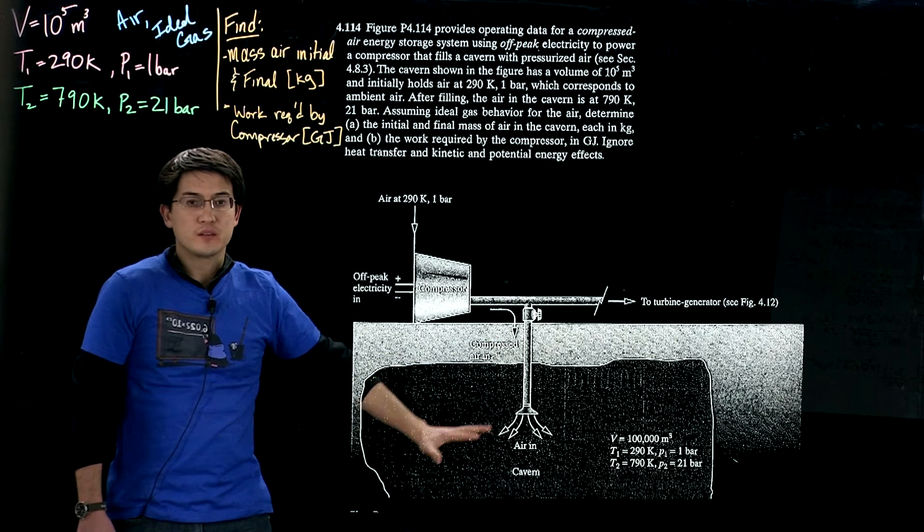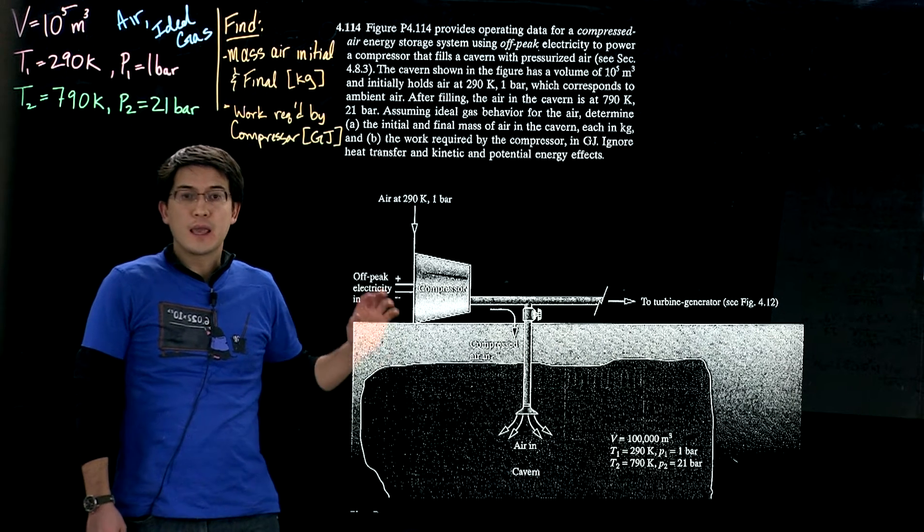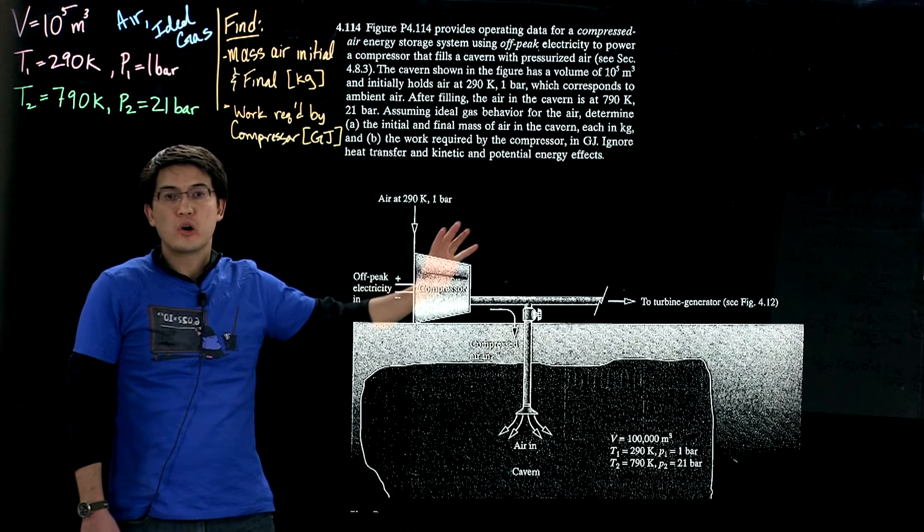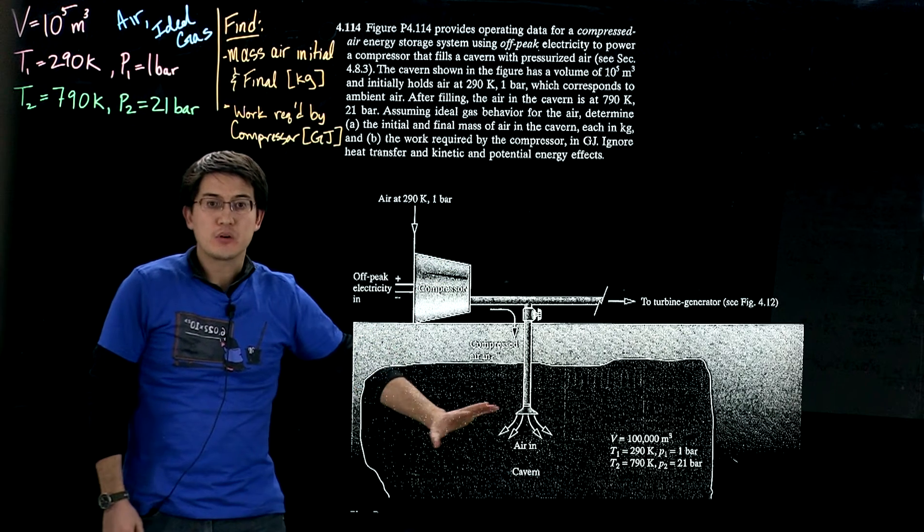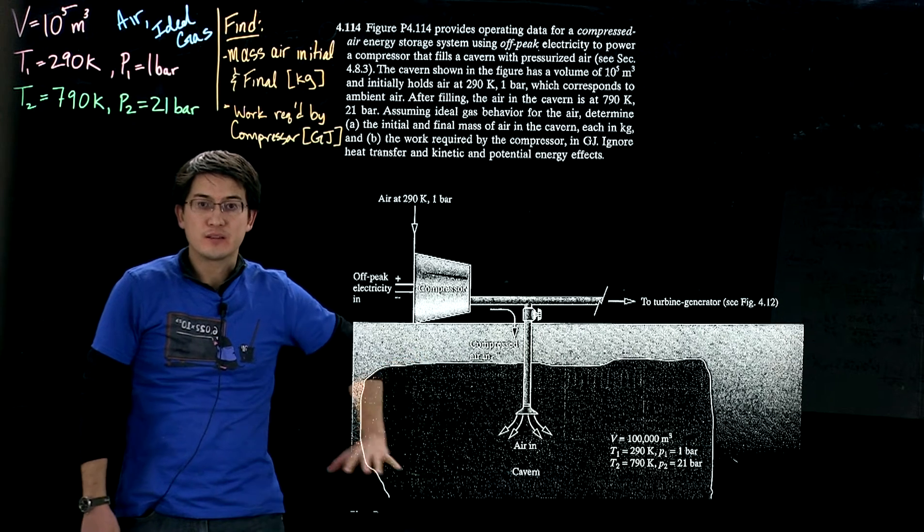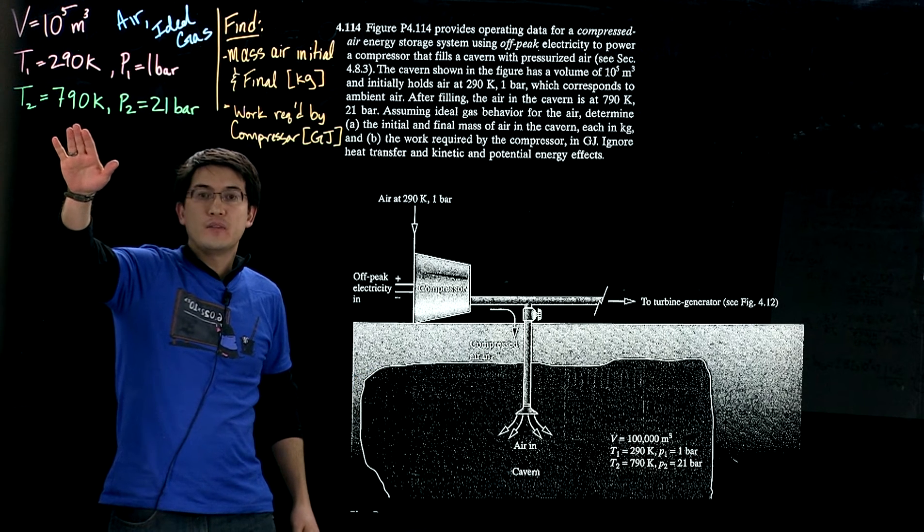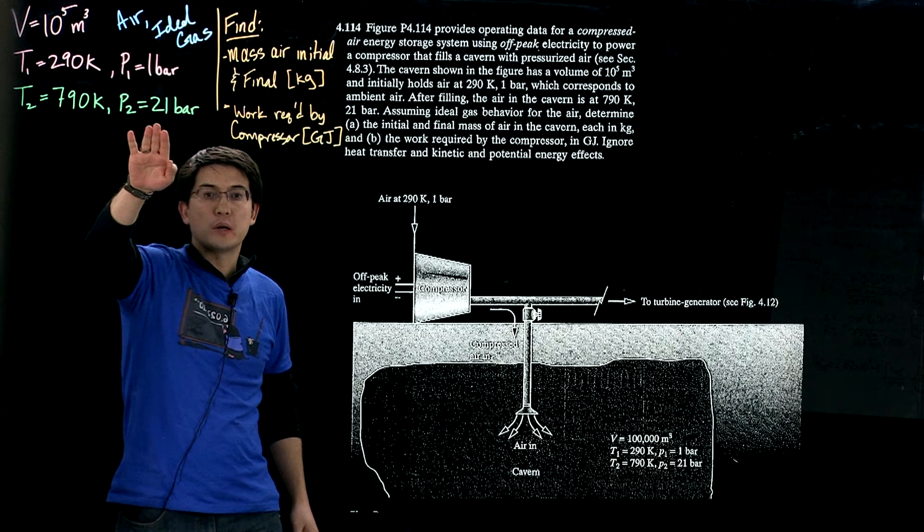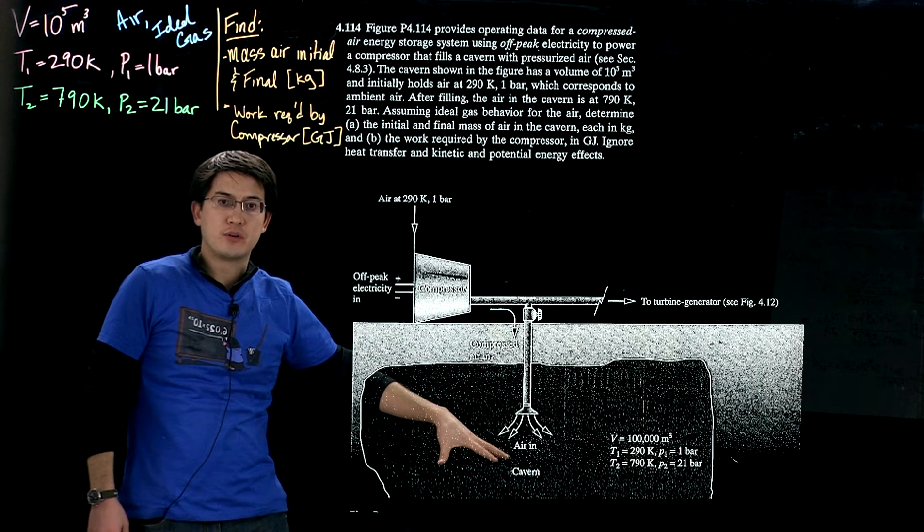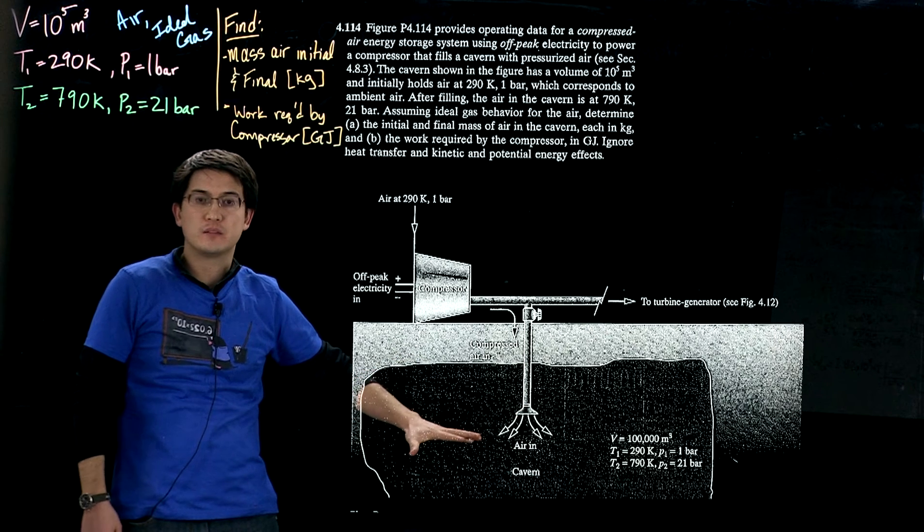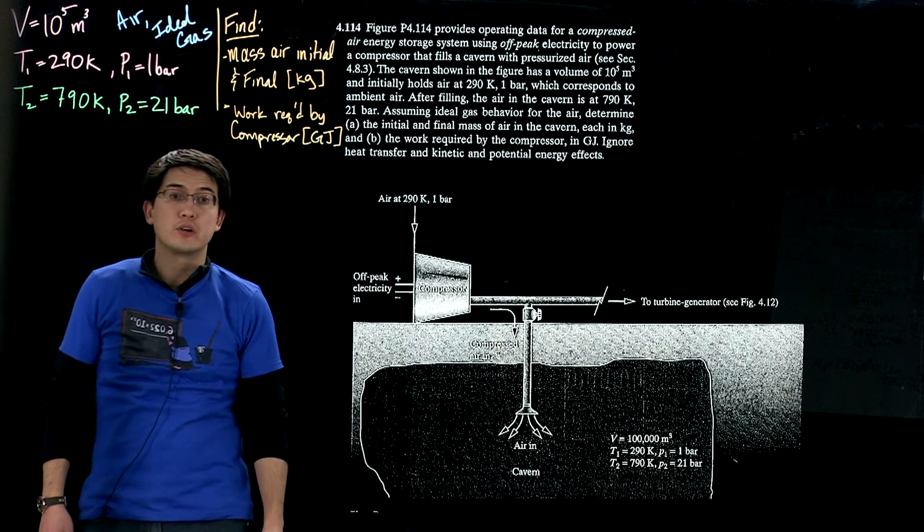We're given that the volume of this cavernous space is 10 to the fifth or 100,000 cubic meters. The ambient air that we're drawing from is initially at 290 Kelvin and at a pressure of 1 bar. After we pressurize this cavern, it's then at 790 Kelvin and at a pressure of 21 bar. This is a single inlet problem where we're only pumping air into the cavern. We're assuming no air is leaving at this point. Later on, air will leave and power that turbine, which we're not going to talk about.